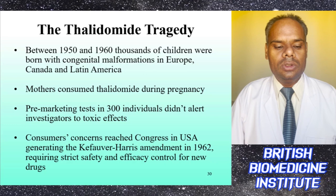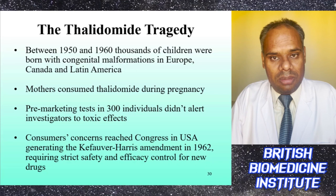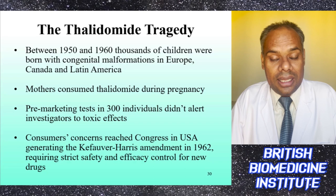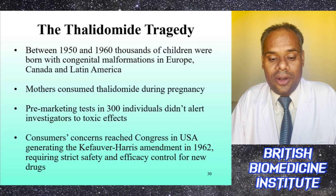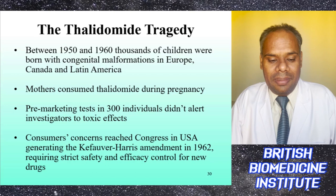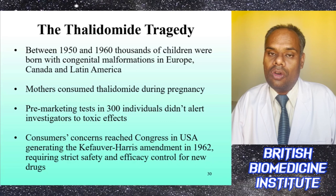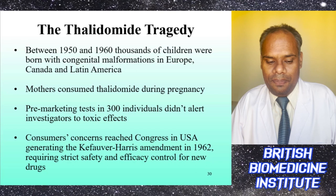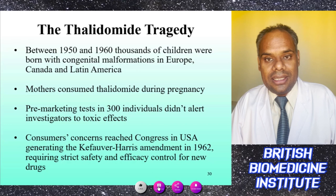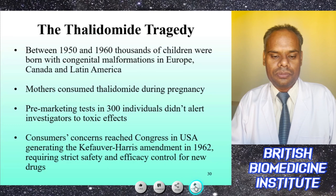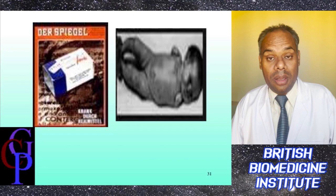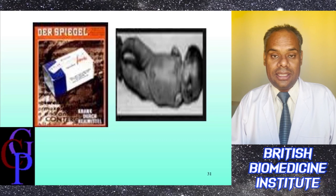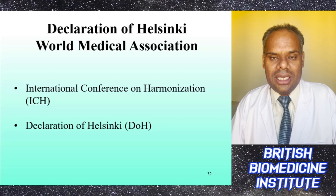From 1950 to 1960, thousands of children were born with limb malformations — limbless and deformed — in Europe, Canada, and Latin America. Many pregnant ladies consumed thalidomide in the first trimester of pregnancy, but as it had only been pre-market tested in 300 individuals, they were not alerted about side effects. Consumer concern reached the US Congress, generating the Kefauver-Harris Amendment in 1962, requesting strict safety and efficacy controls for new drugs.